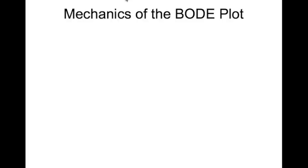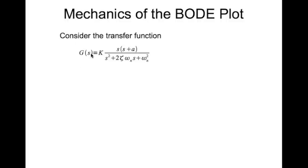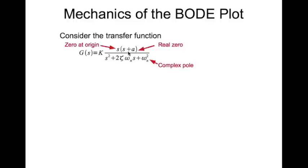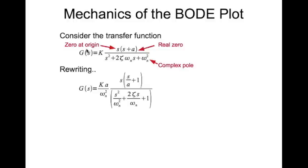Now let's go with the mechanics of drawing the Bode plot. Consider the transfer function G of s. Here we have a zero at origin, a real zero at A, and a complex pole. The idea is if you can draw the Bode plot of these individual factors, you should be able to get the Bode plot of the full transfer function. So we can rewrite this transfer function like so.